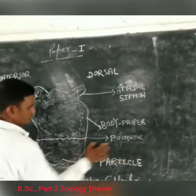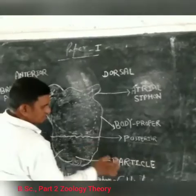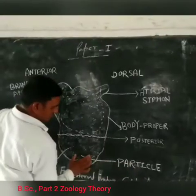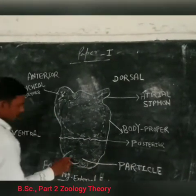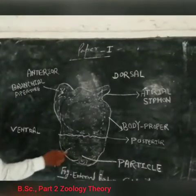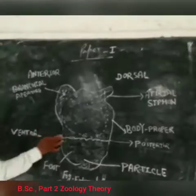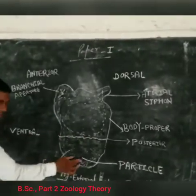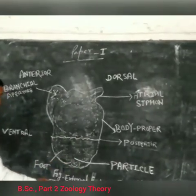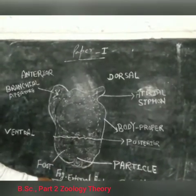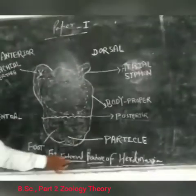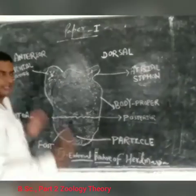This is the posterior seat. Particles are called down. This is the foot and the ventral side. The diagram shows the external features of Herdmania.